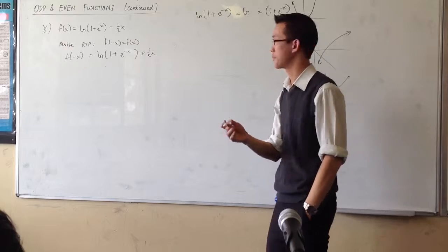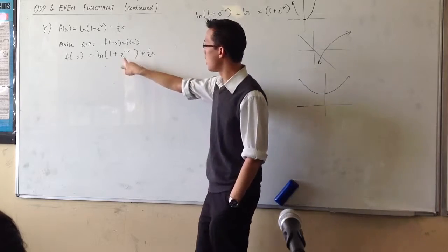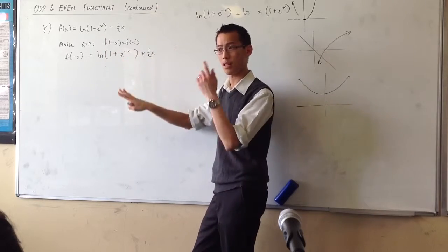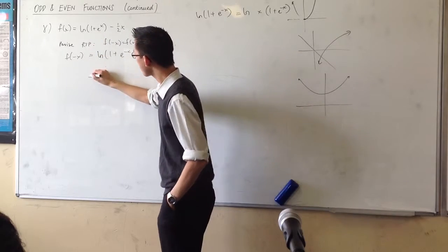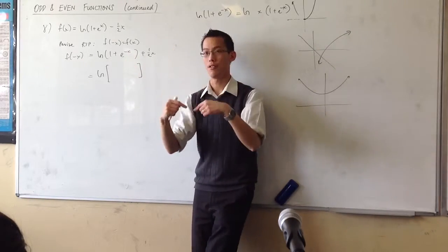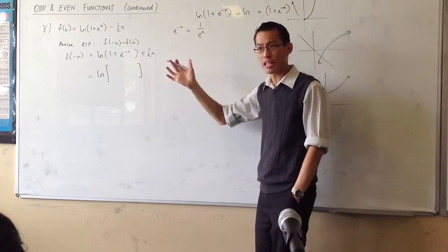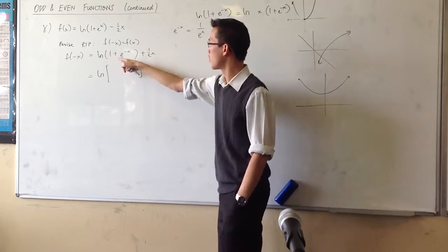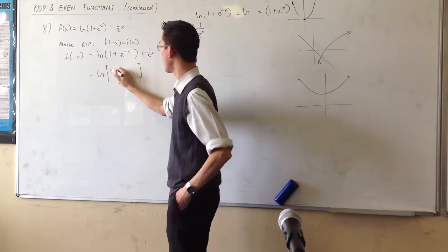You need to know some log rules to simplify this. My clue is: I've got to somehow get this to look back like the original again. There's going to be some multiplication involved. e to the minus x is like 1 over e to the x — think back to your index laws. Cross the line and change the sign. So if that's 1 plus 1 over e to the x, I can multiply through by e to the x over e to the x — which is multiplying by 1 — to bring it back to something very similar.